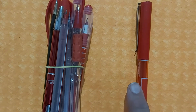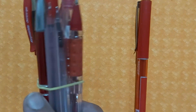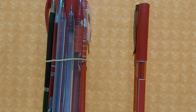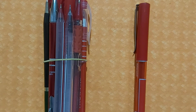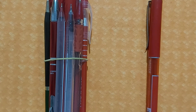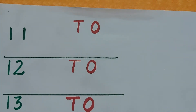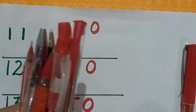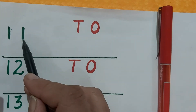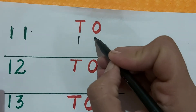10 is a double digit number. 1 is a single digit number. When we make a bundle of 10 things, we say it 1 ten. This is 1 ten and this is 1 one. 1 ten and 1 one is called 11. So 1 ten we write under tens and 1 one we write under ones.